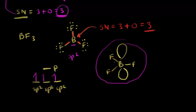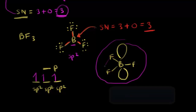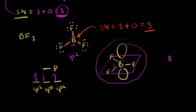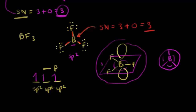This boron is sp2 hybridized, so we can talk about the geometry of the molecule — it's planar. Around this boron it's planar, so bond angles are 120 degrees. A circle is 360 degrees, and dividing 360 by three gives 120 degrees for all the bond angles. In the next video we'll look at sp hybridization.